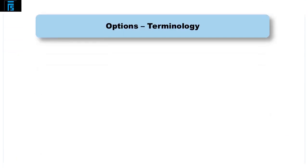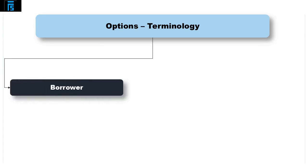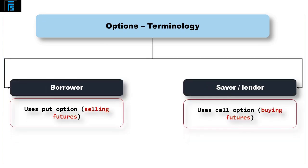A short note on terminology: a borrower would hedge potential borrowings using a put option or selling futures. A saver or lender can also use derivatives to hedge against interest rate movements — they'll be concerned about a fall in rates as this will reduce their income. They will hedge this position by buying futures or using a call option.